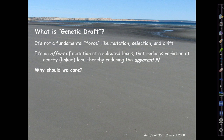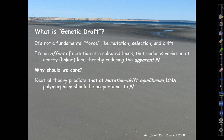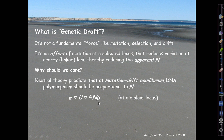Why should we care about this, and why should we devote an entire lecture to it? The neutral theory predicts that at mutation-drift equilibrium, DNA polymorphism should be proportional to the population size N. The key relationship, which has been understood for decades, is that theta, defined as 4 times N times mu — where mu is the mutation rate per generation at a diploid locus — should closely approximate pi, the nucleotide-level diversity or heterozygosity at neutral sites nearby.